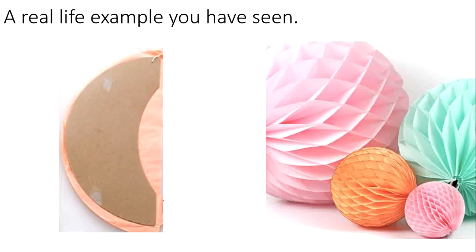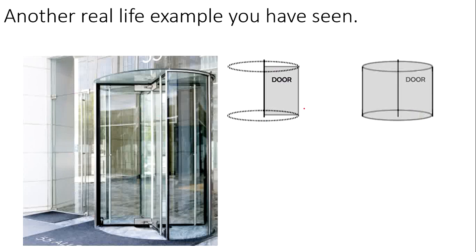Let's look at some real-life examples. Honeycomb decorations—foldable tissue paper—when you unfold them around that axis, a semicircle turns into a sphere. Another example is a revolving door: the door itself is a rectangle, which is the 2D shape, and if you keep revolving it all the way around, the 3D object becomes a cylinder.